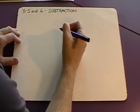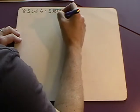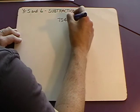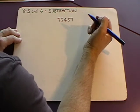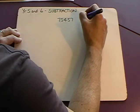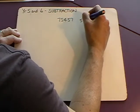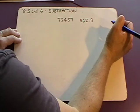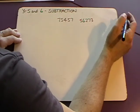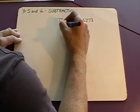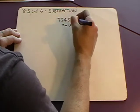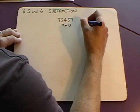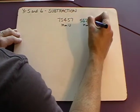We'll start with the context. If we had 75,457 Manchester United fans watching a match and there were 56,273 Manchester City fans watching a match, how many more Man United fans are there than City fans? So these are the Manchester United fans, these are the Manchester City fans. How many more Manchester United fans than Manchester City fans?